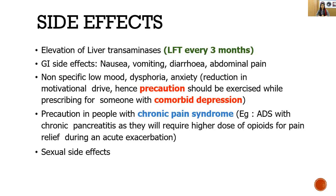Gastrointestinal side effects include nausea, vomiting, diarrhea, and abdominal pain. Notably, naltrexone can cause low mood, dysphoria, anxiety, and reduction in motivational drive — the patient may become amotivated. You must be cautious when prescribing naltrexone in patients with depression. When alcohol use disorder co-exists with comorbid depression, naltrexone's side effects can mimic depression, making it appear that antidepressants are not working, when in fact it may be a side effect of naltrexone.